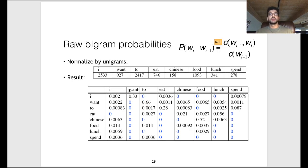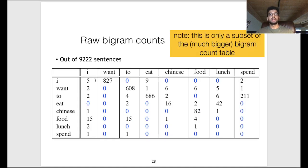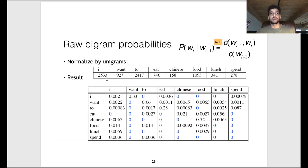After counting all bigrams, I divide by the denominator — the unigram count of word i-1. For example, if there were 2,500 occurrences of the word 'I' and 827 occurrences of 'I want,' dividing 827 by 2,500 gives 0.33, meaning there's a 33% conditional probability of 'want' given 'I.' We can do this for all cells in our table, noting again the many zero conditional probabilities that we'll address later.